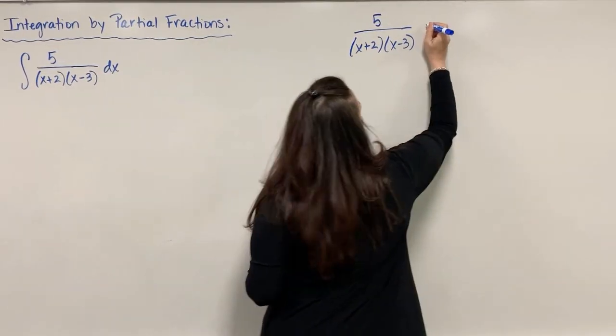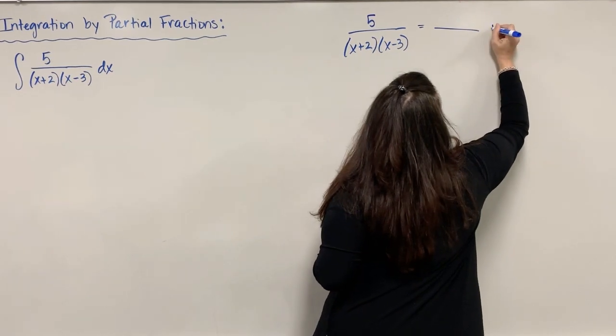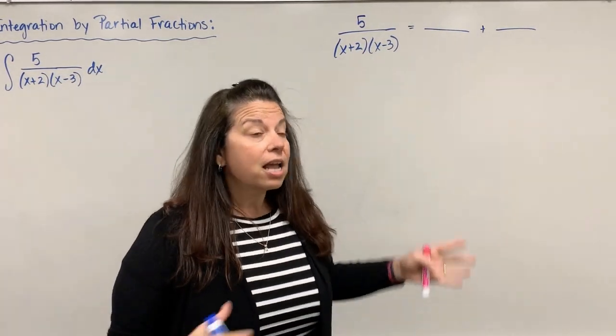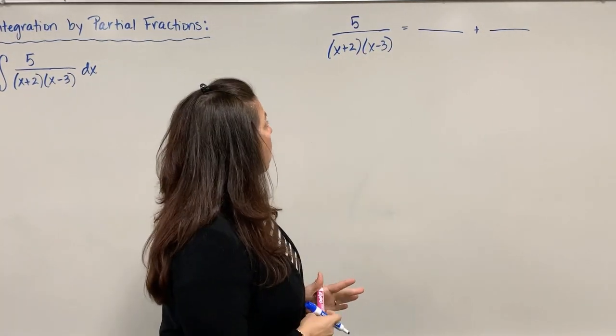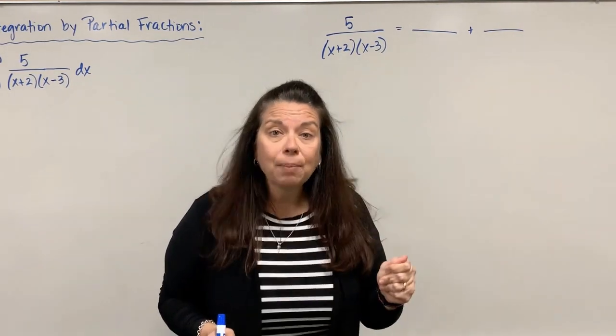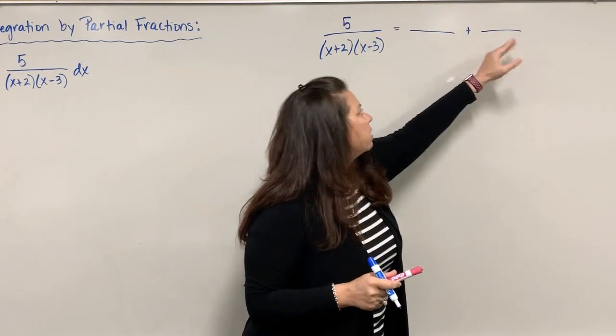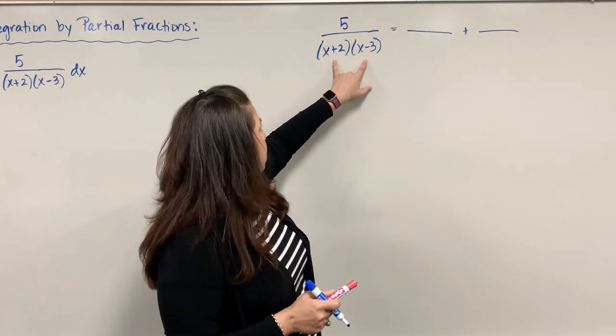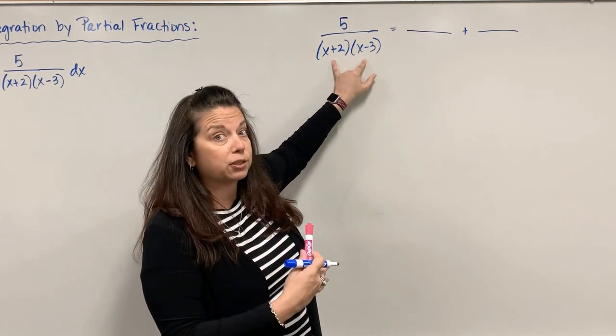Right now I have 5 divided by (x+2)(x-3), and I want to break apart this one fraction into two separate fractions. The trick is I don't know what the numerators are.